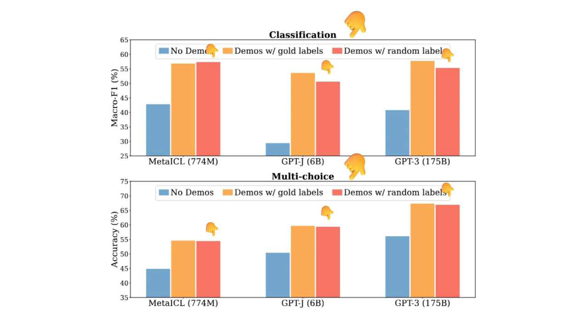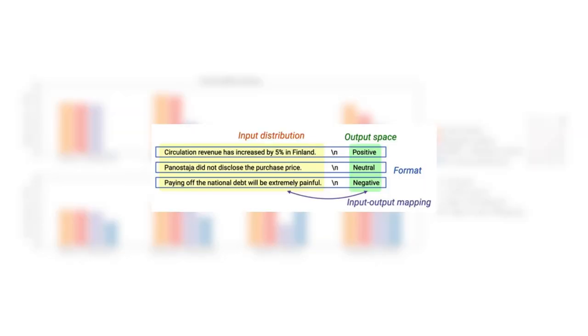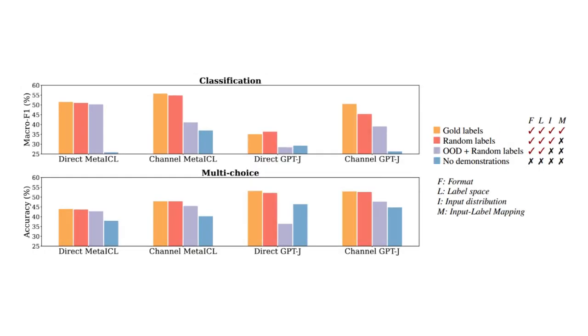Remember, we don't only have the input and output distribution, we also have the format and the input-output mapping. What they saw was the following: having a perfect in-context example is usually the best as expected. Removing the right input-output mapping, aka scrambling, while keeping the right output space is not changing anything much.